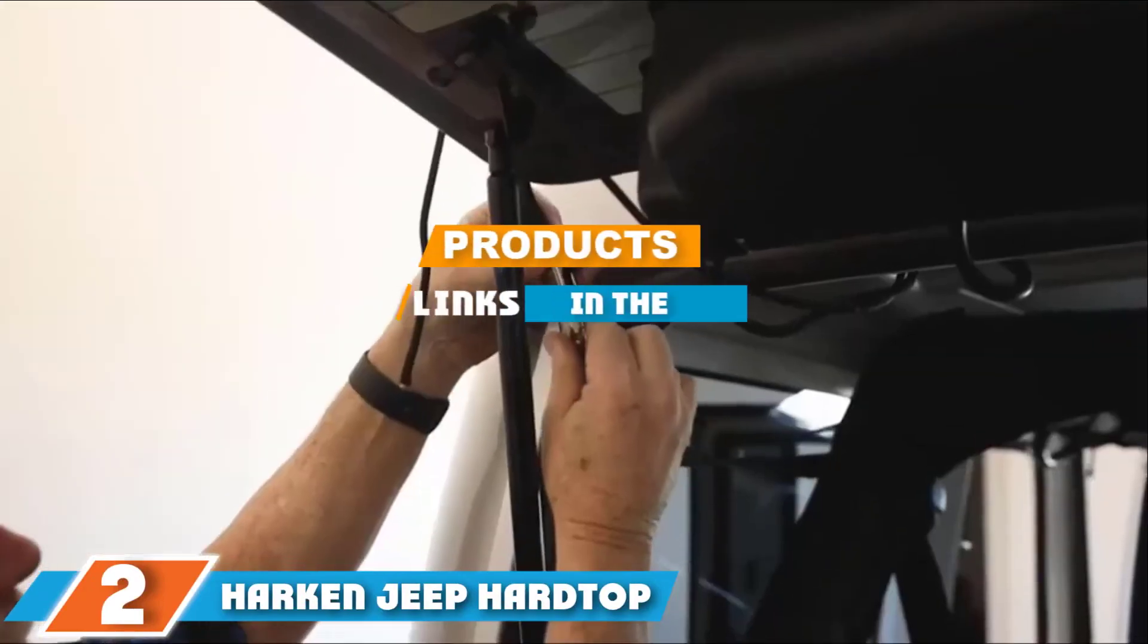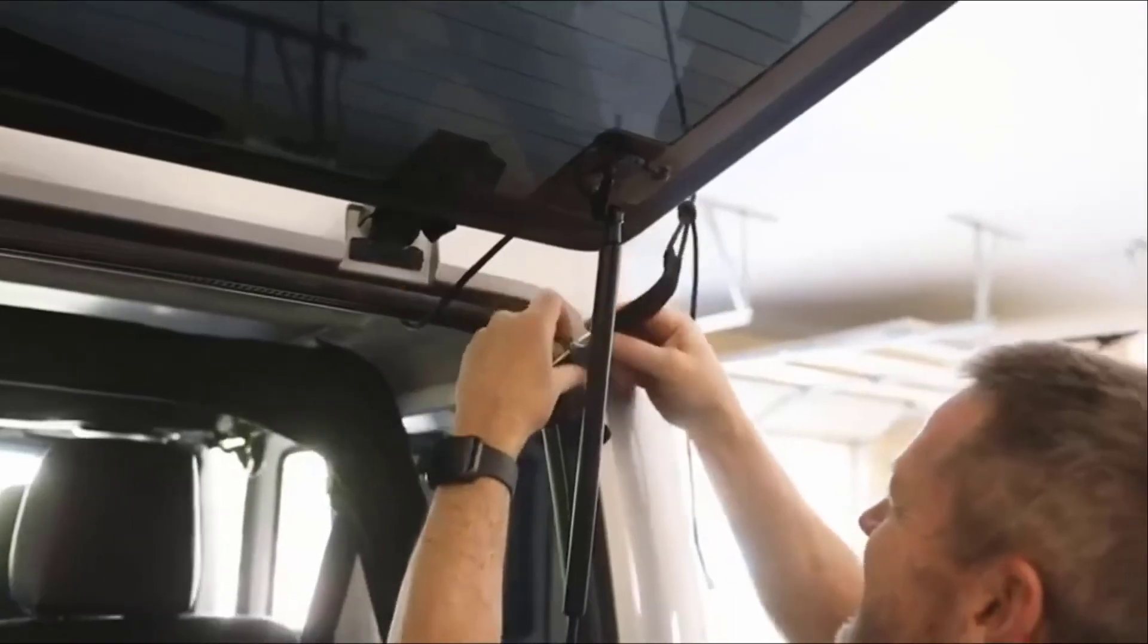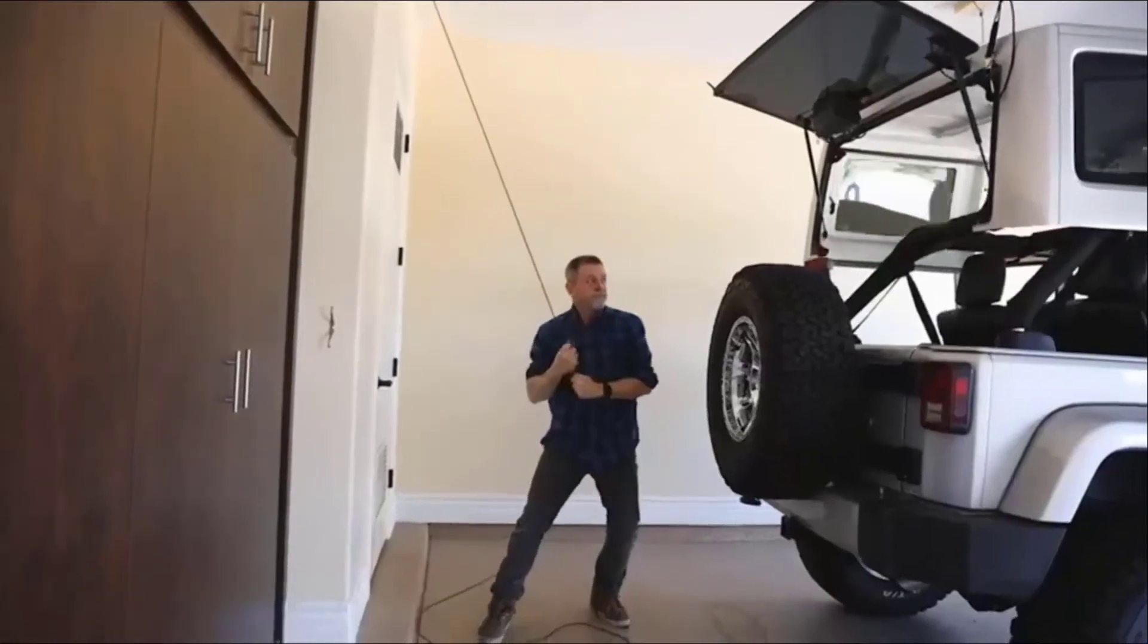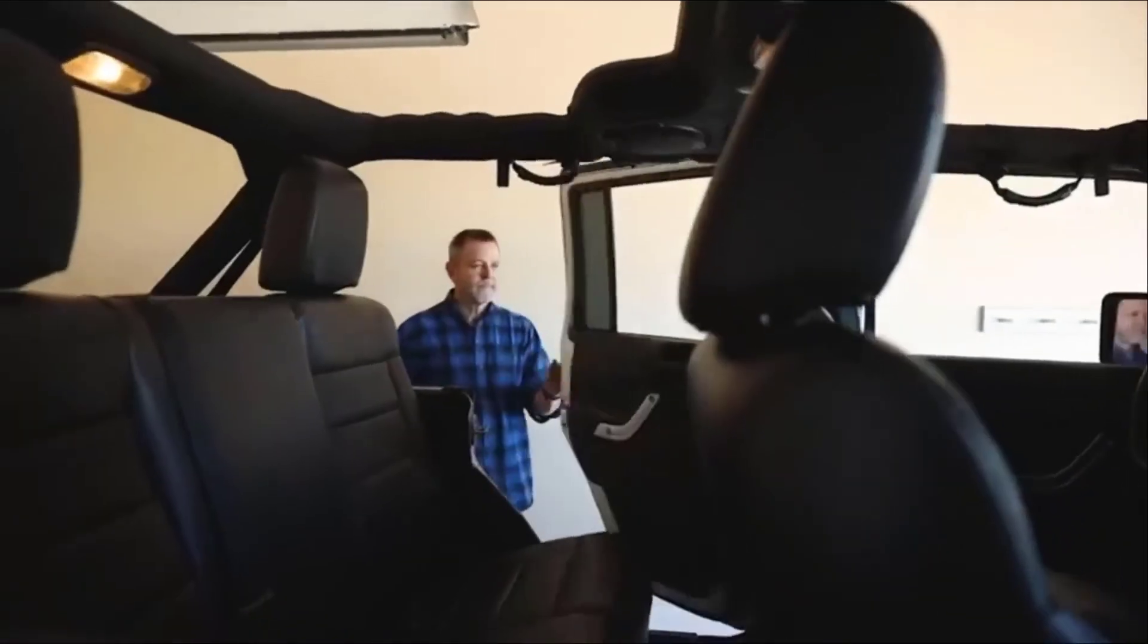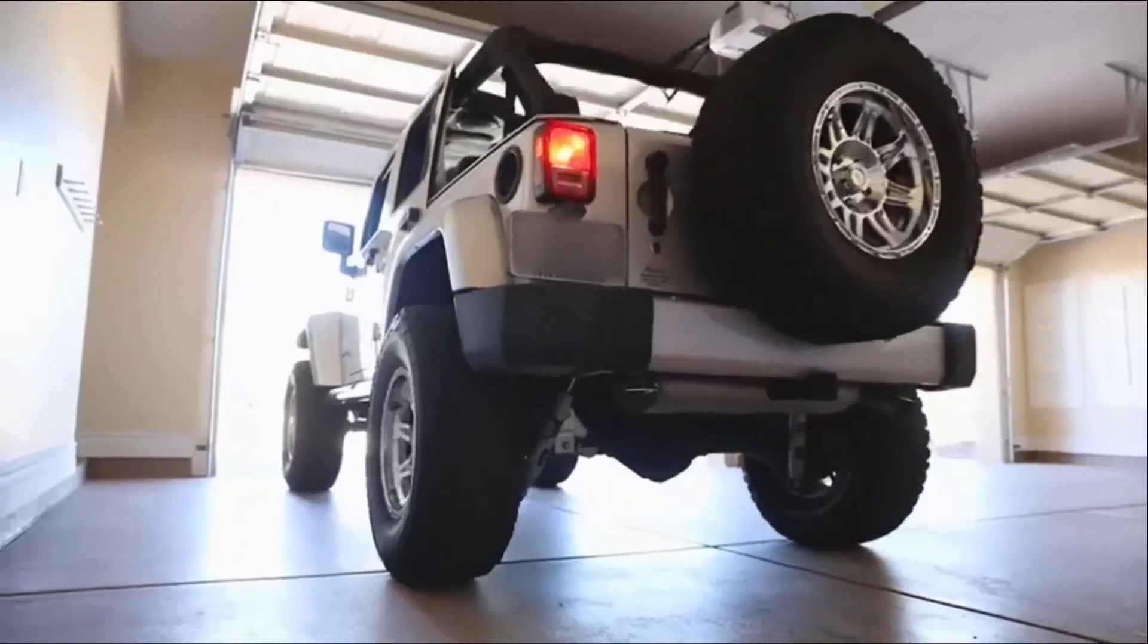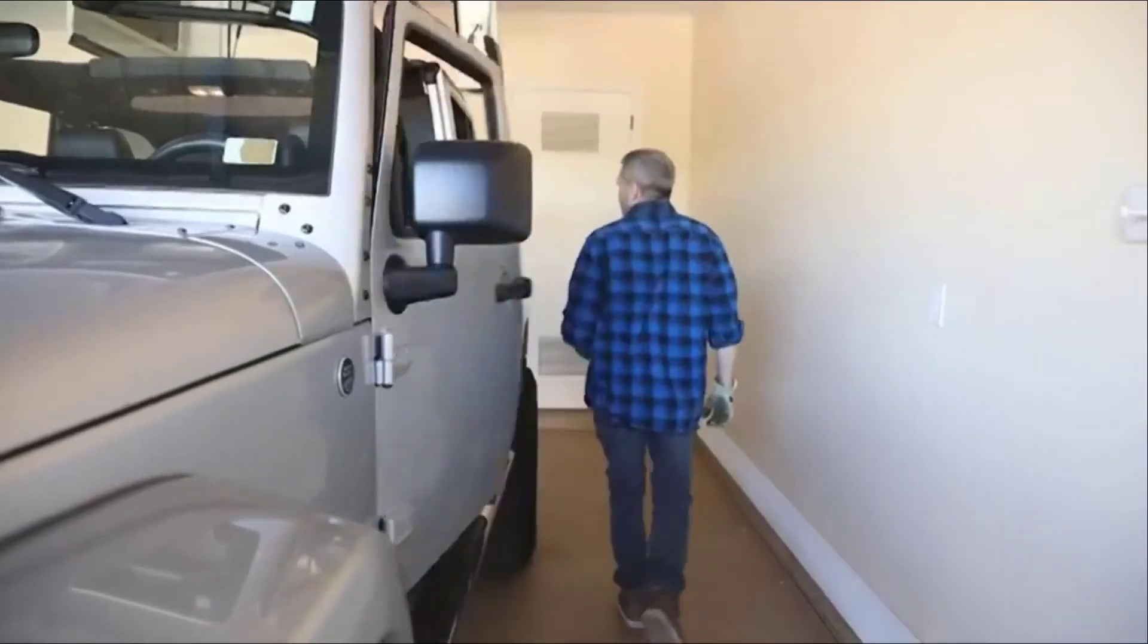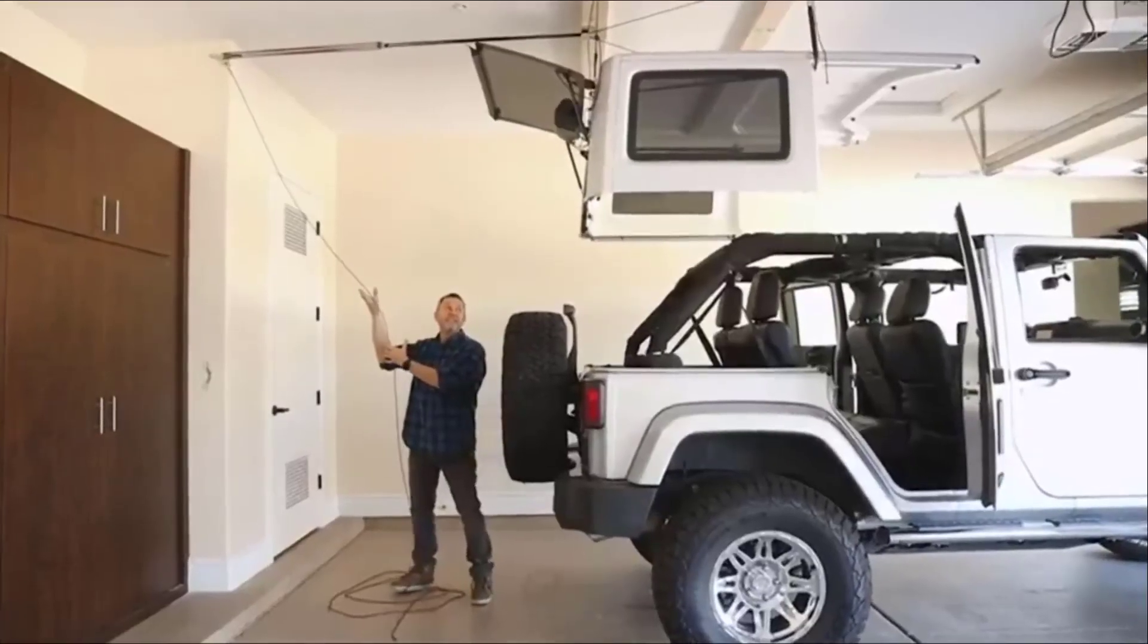The number two position is held by Harken Jeep Hardtop Garage Storage Hoist. This Harken Jeep Hardtop Garage Storage Hoist is a manual hoist system that is made for easier storing of Jeep hardtops. However, this hoist can be used for a range of items including kayaks and canoes because it has a four point hoist system. These four points can let you lift a kayak evenly even if the load is not equally balanced. This can be ideal for lifting kayaks that might be heavier at one end than the other.